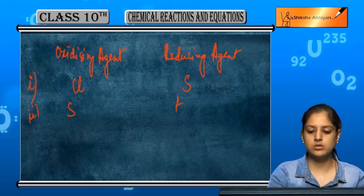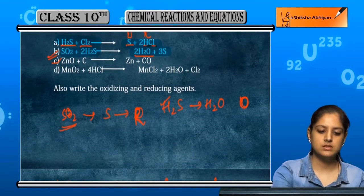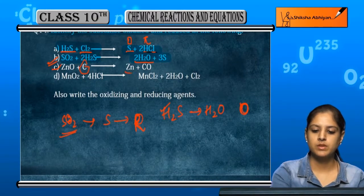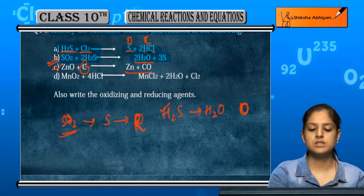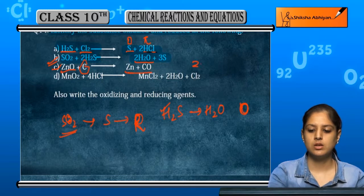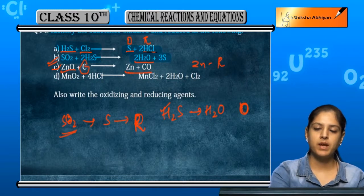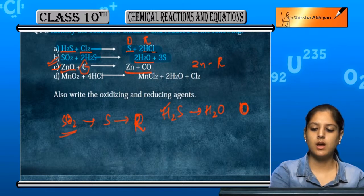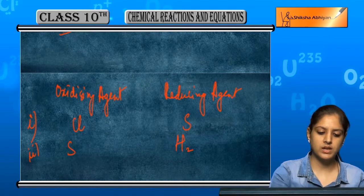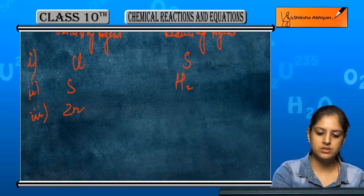SO₂ oxidized hydrogen, so H₂S is the reducing agent. Next is ZnO and C, that is carbon, giving Zn and CO. You can see the oxidizing agent in this reaction.